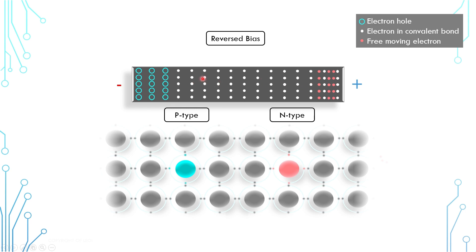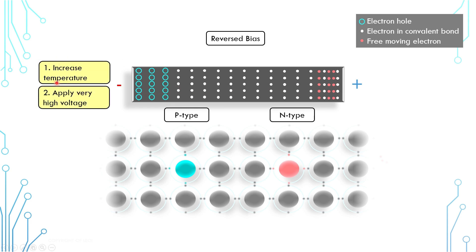There are several ways to make current flow through a PN junction in reversed bias mode. One is to increase the temperature, and another is to increase the voltage so high that the PN junction breaks down. There is another mechanism which is important to understand transistors: if we manage to introduce red electrons here, they will be able to flow across the PN junction, or if we are able to introduce electron holes here, then the white electrons can move. We will look into this in a future video.